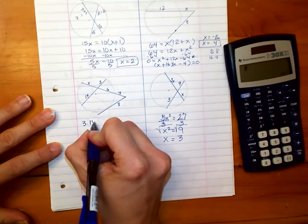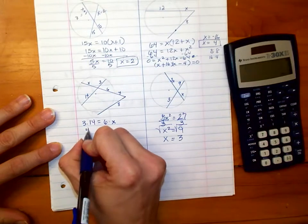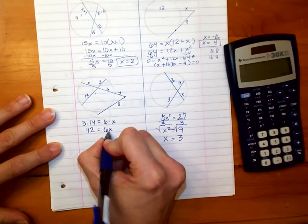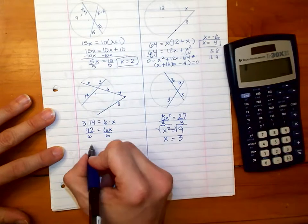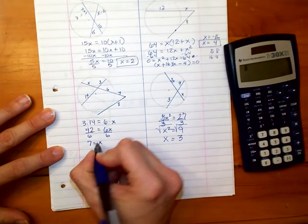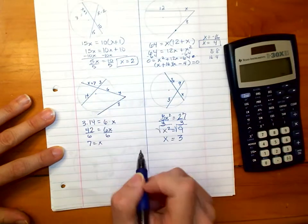So 3 times 14 is going to equal 6 times X. 42 equals 6X. And if we divide by 6, we will find X. So 7 equals X. So we know that equals 7, and now we know that this part, 6 plus 7, is 13.